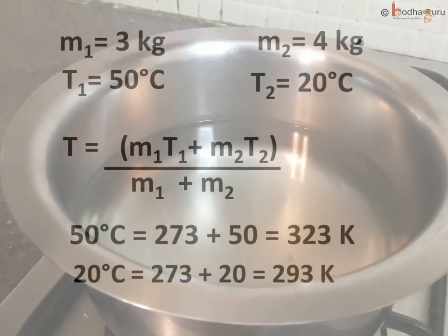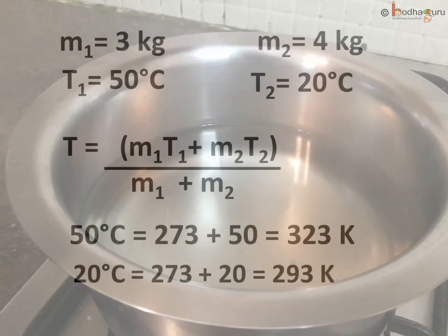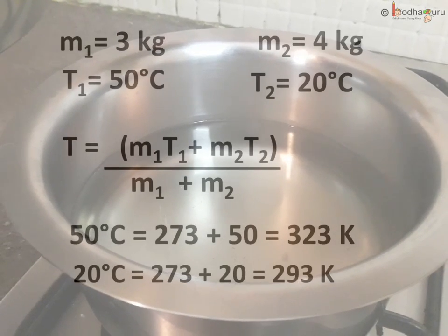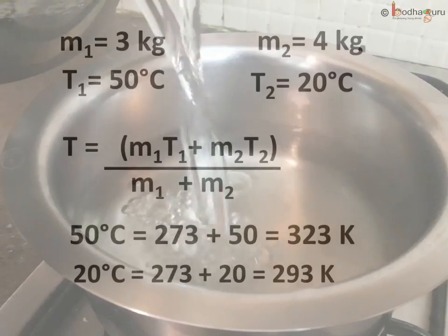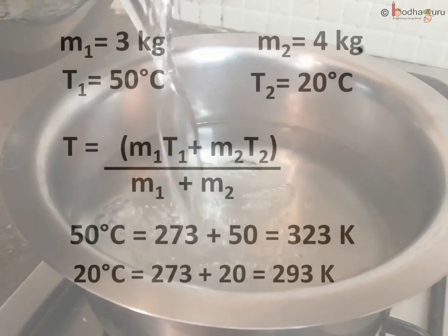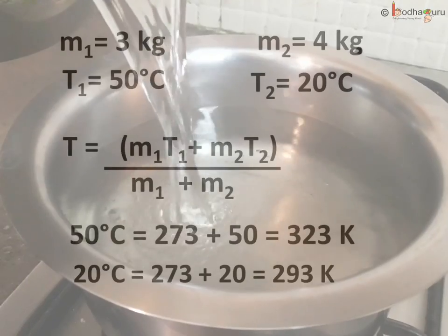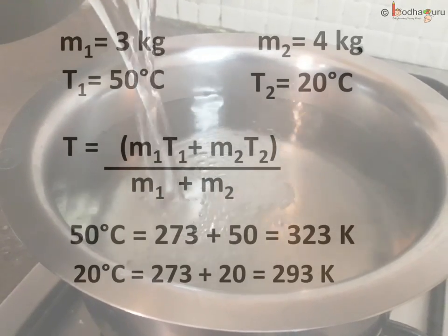We already know the final temperature of a mixture is given by the formula M1 T1 plus M2 T2 whole divided by M1 plus M2. Here M1 equals 3 kg and M2 equals 4 kg.